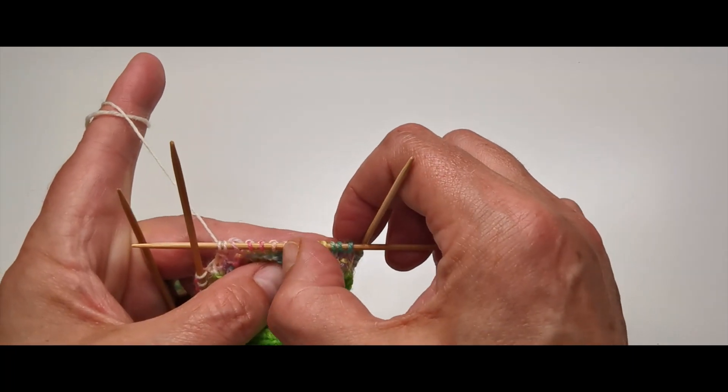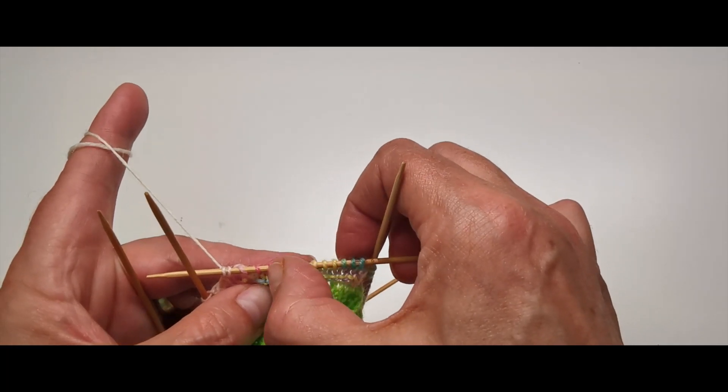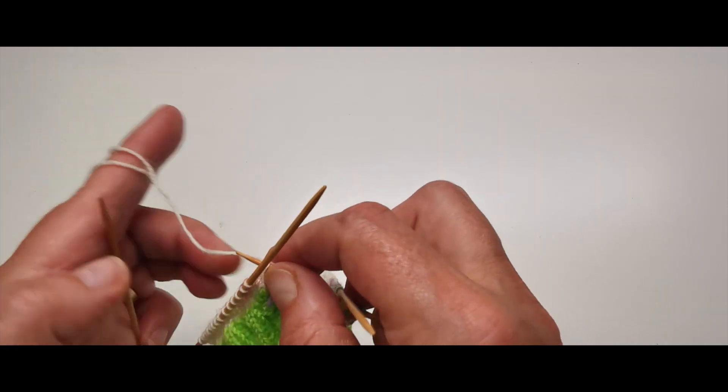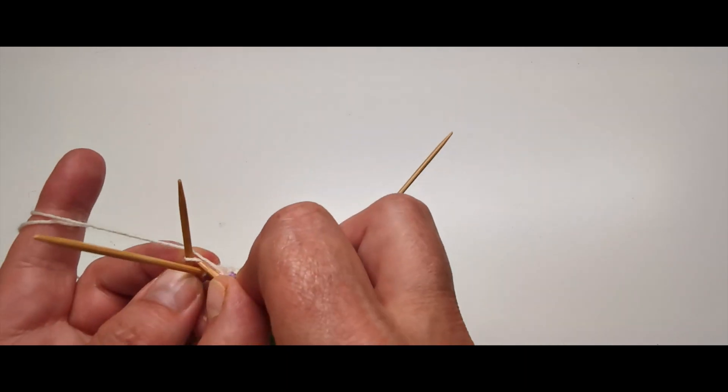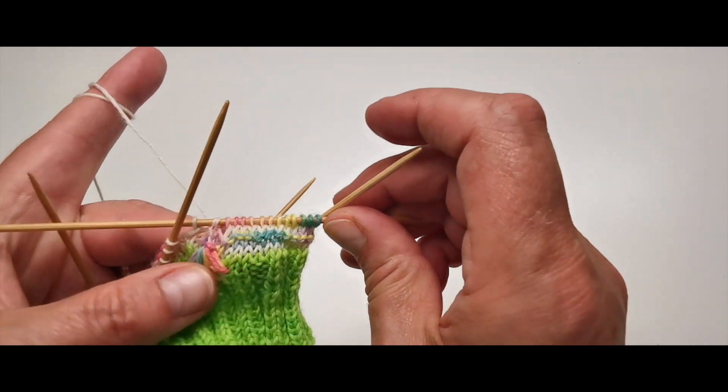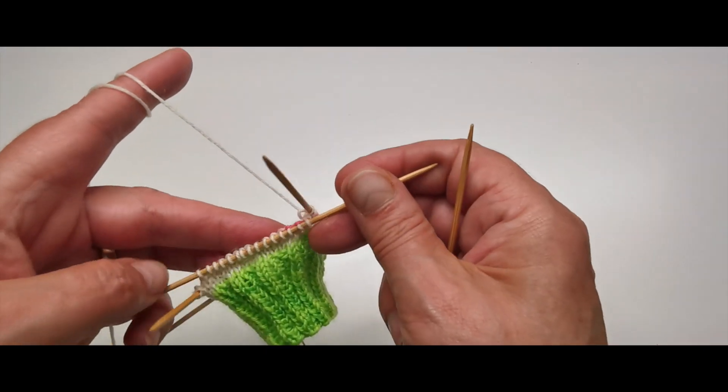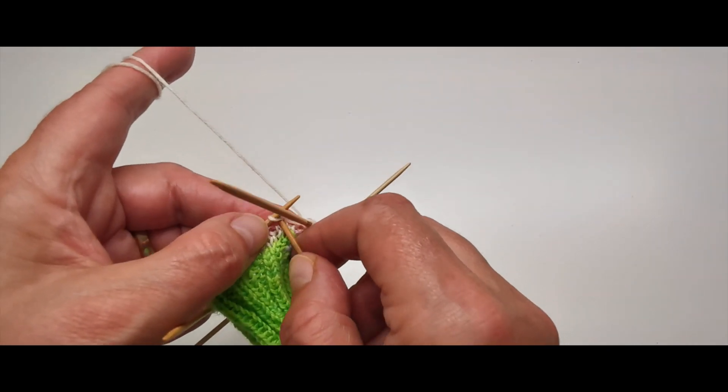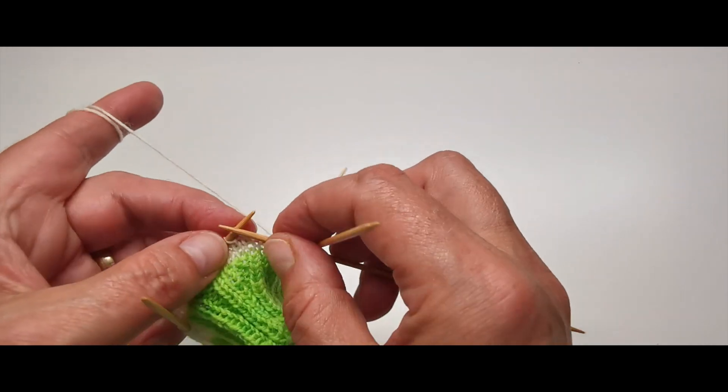Und dann nehme ich die vom Querfaden und stricke die einfach verschränkt rechts ab. Das solltest du zwischendurch immer wieder kontrollieren, damit dir nicht irgendwann mal eine Masche fehlt. Jetzt stricke ich mehrere, zwei bis drei Reihen glatt rechts, bis ich an eine Stelle komme, an der ich mir so eine Regenbogensternschnuppe gut vorstellen kann.